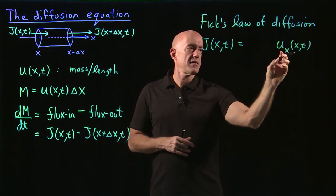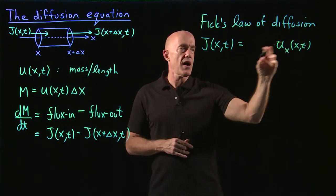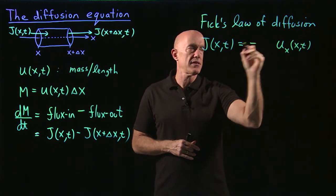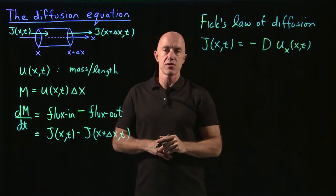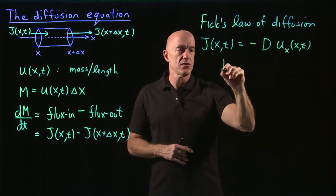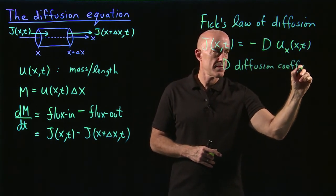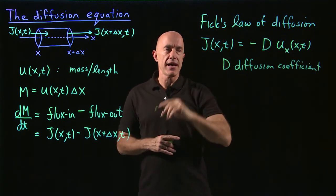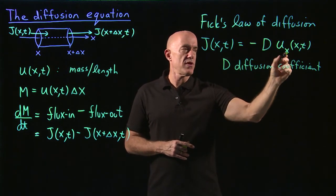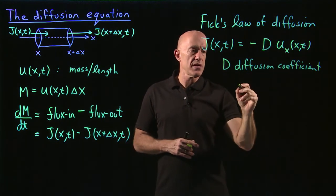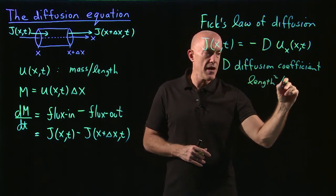Now, u sub x is positive when going from low to high, but the flux goes from high concentration to low concentration, so we need a minus sign. And there is a proportionality constant called the diffusion coefficient D. The units work out as follows: j is mass per unit time, u is mass per unit length, and the derivative is mass per unit length squared, so the diffusion coefficient has units of length squared divided by time.